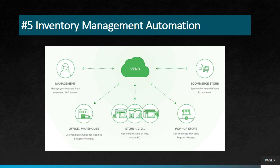The next automation achievable using RPA is inventory management automation. Automating inventory management using SAP and RPA reduces time and effort. Businesses can automatically track inventory levels, generate purchase orders, manage stock, and manage movements. This can help businesses reduce inventory costs and improve their supply chain efficiency.